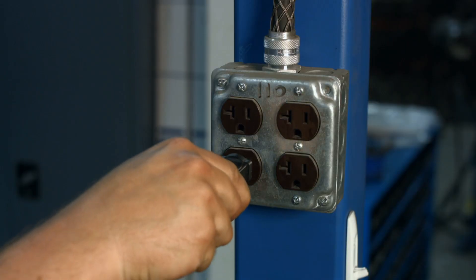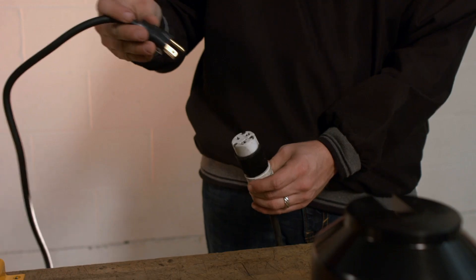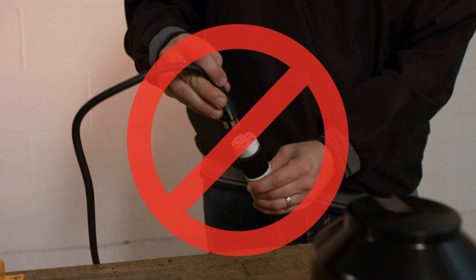The Crimper must be plugged directly into a wall socket. Never use an extension cord, as damage to the motor or other electrical components could occur.